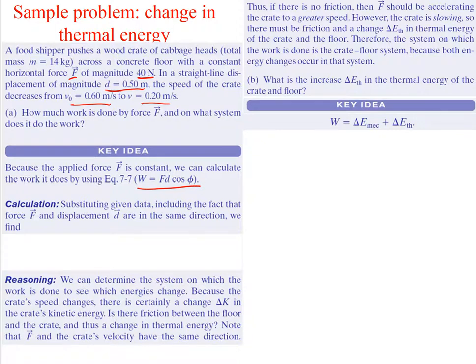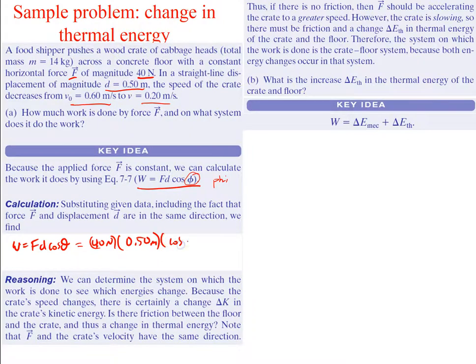Work is equal to force times the cosine of theta. Substituting the given data, including the fact that the force and the displacement are in the same direction, work equals Fd cosine theta. Note: the textbook uses the variable phi here for the angle, but I'll use theta. This equals 40 newtons times 0.5 meters times cosine of 0 degrees, giving us just 20 joules — simply 0.5 times 40.